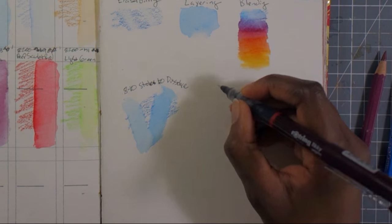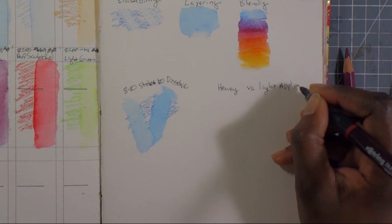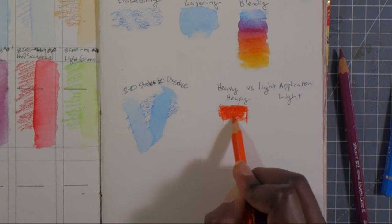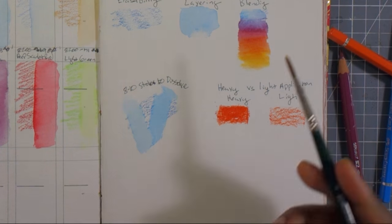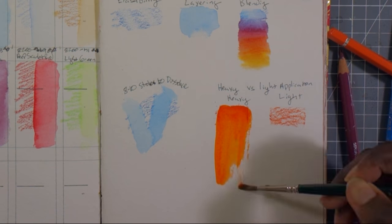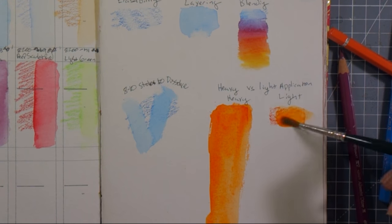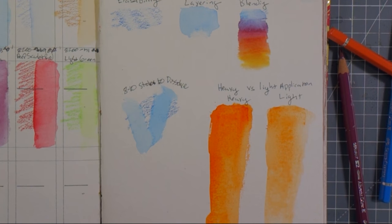I've been doing these tests with a pretty light hand. So I wanted to see what the color payoff would be on a heavy versus light application. With the heavy application, you get tons of pigment. Look at that. It just goes all over the whole page. And with the light application, you also get tons of pigment. It's just a lighter color.